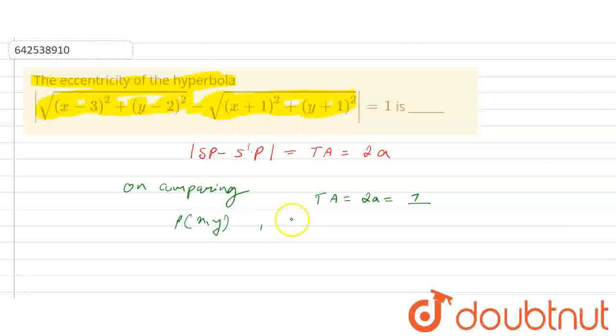The focus S is at (3, 2), from x-3 and y-2. The other focus S' is at (-1, -1), from x+1 and y+1, giving us (-1, -1) as the other focus.